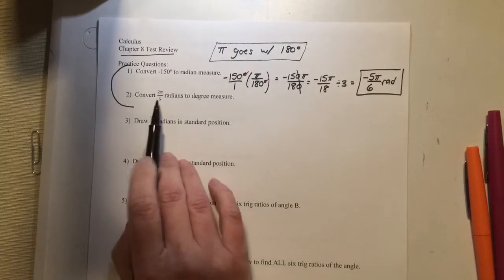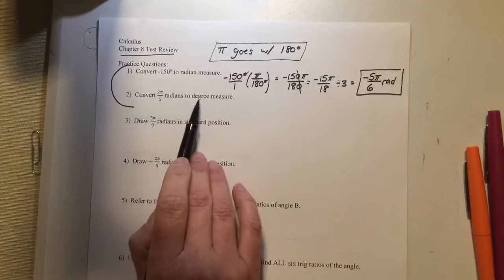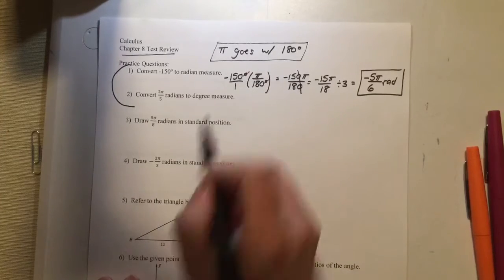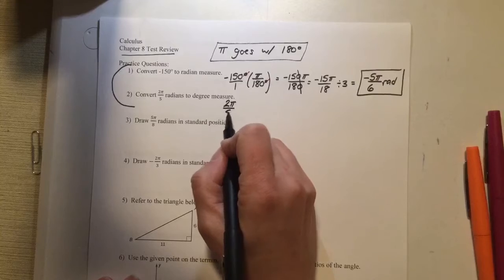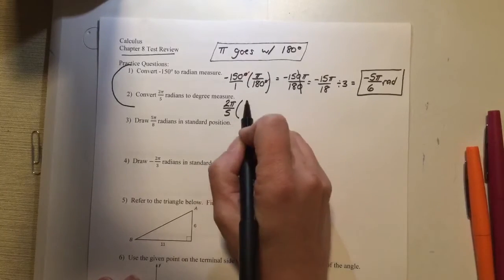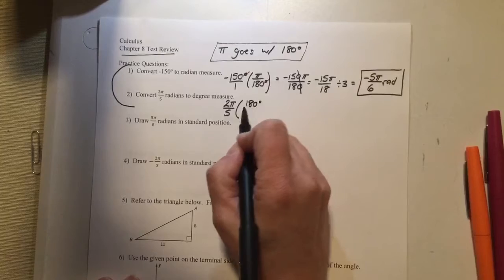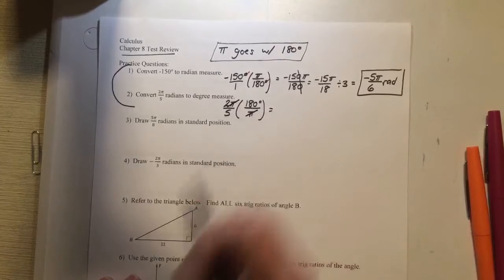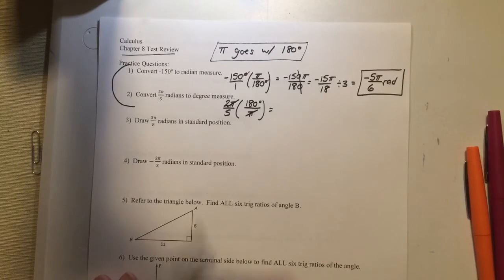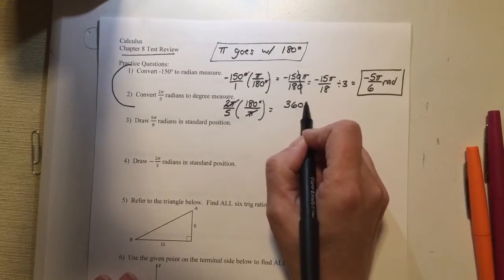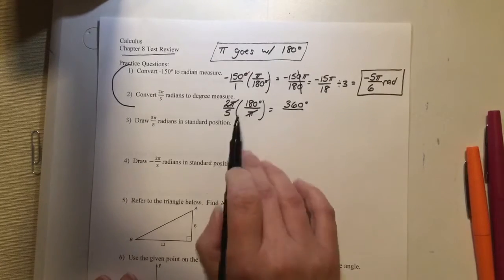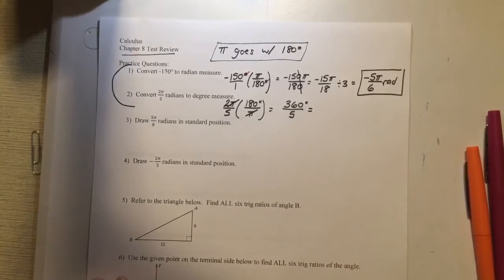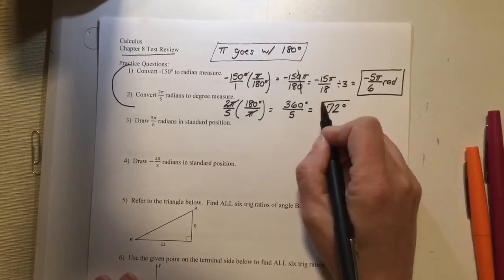If you are going the other way — if you know radians and you're going to degree measurement — you use the same relationship; you just have to flip that fraction upside down. So if I have 2 pi over 5 radians and I want to end in degrees, the 180 degrees goes on top. Pi cross-cancels pi. When you multiply fractions, top times top: 2 times 180 degrees is 360 degrees; on the bottom, 5 times 1 is 5. 360 degrees divided by 5 is 72 degrees.